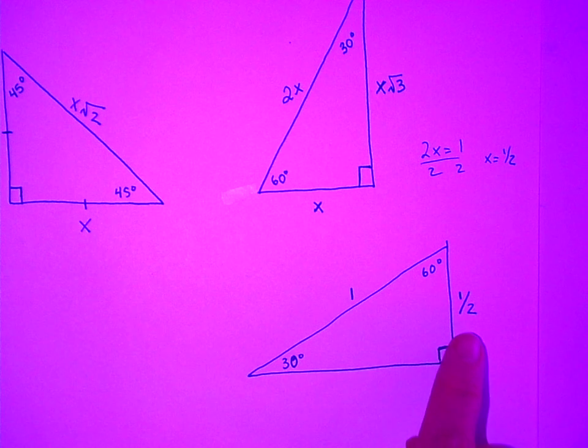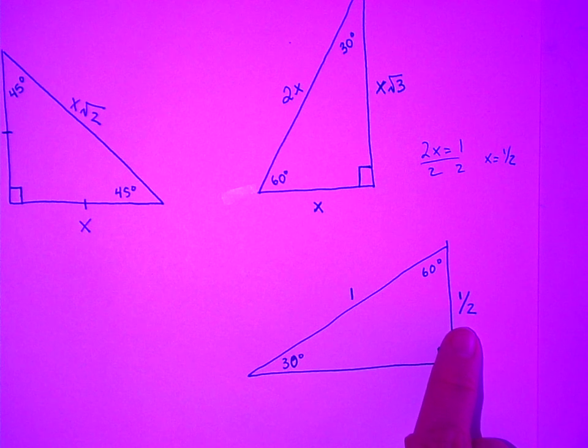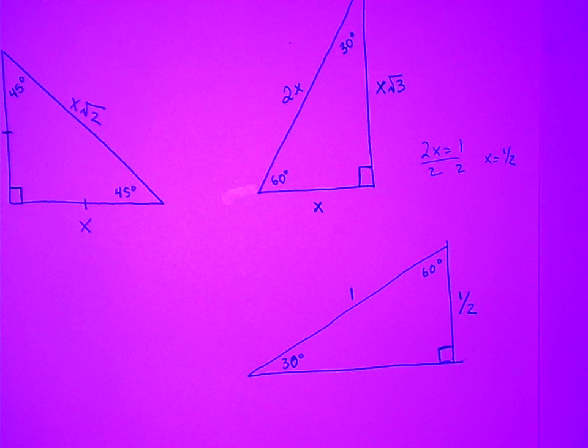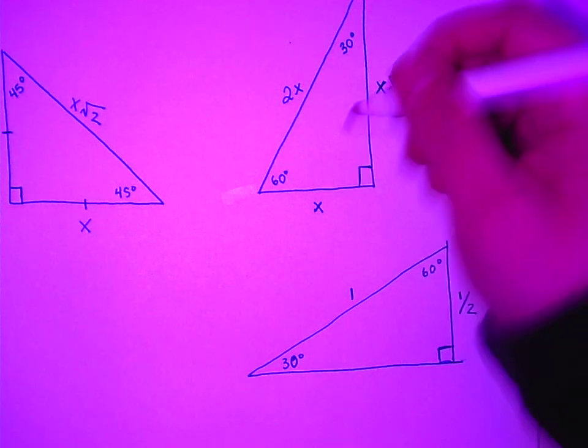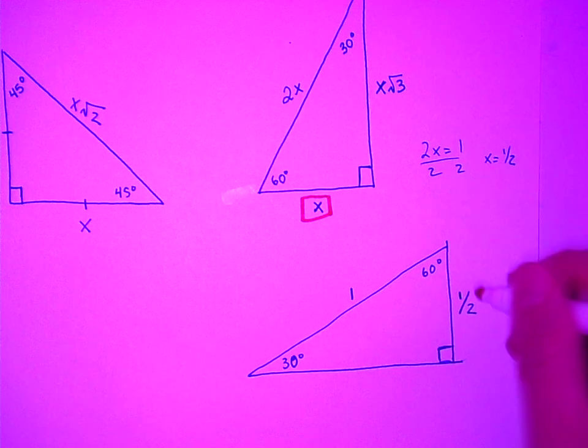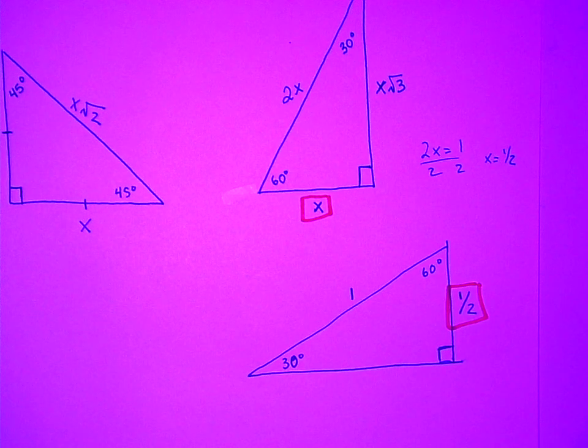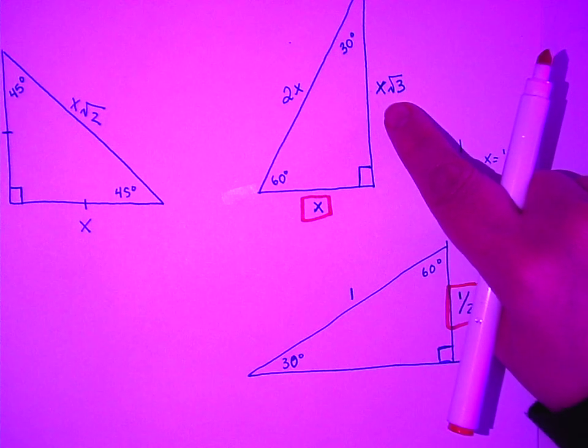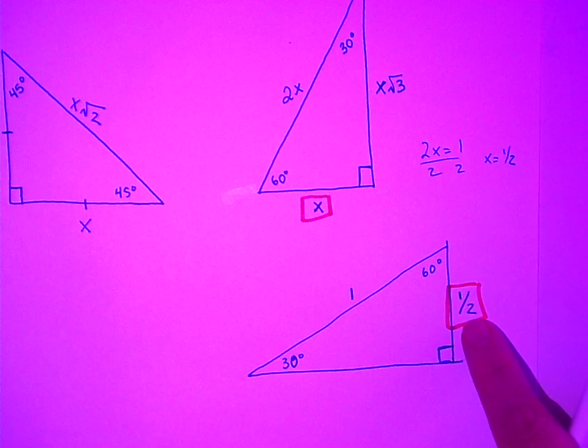So I'm going to put one half over here, because that little short side is one half. And then, how come I put it over here? Because what? You see how it's just the triangle kind of flipped and turned? This side is x times the square root of 3, or one half times the square root of 3.